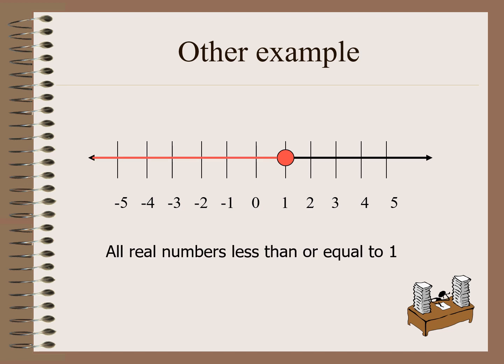Let us have another one. We have the inequality x is less than or equal to 1. At 1, we use a closed dot, and then the direction is to the left because it is less than. The solution is all real numbers less than or equal to 1.